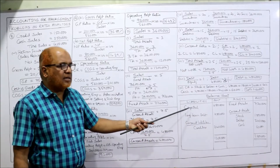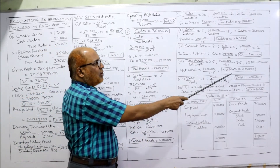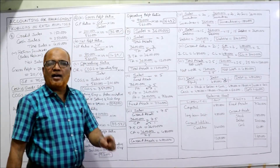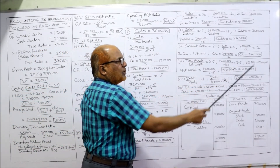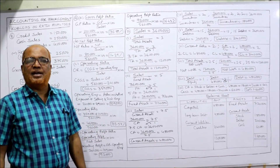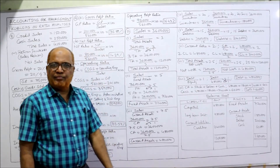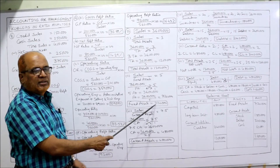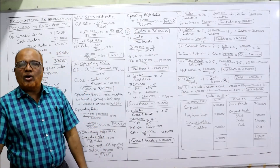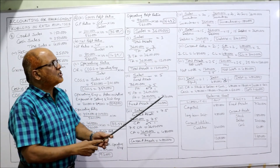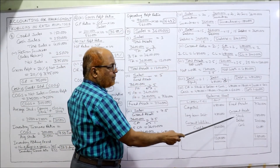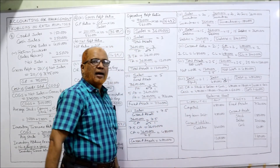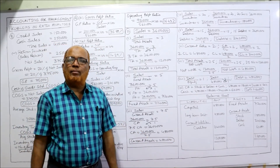Balance sheet — liability side: Capital (net worth) 4,80,000; long-term debt 4,80,000; current liabilities (creditors) 2,40,000. Total liabilities: 12 lakhs. Asset side: fixed assets 7,20,000; current assets — stock 1,80,000, debtors 2,40,000, cash 60,000. Total assets: 12 lakhs. Balance sheet tallied — total assets and total liabilities are equal.